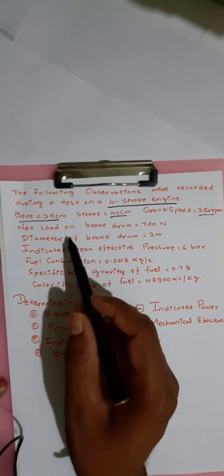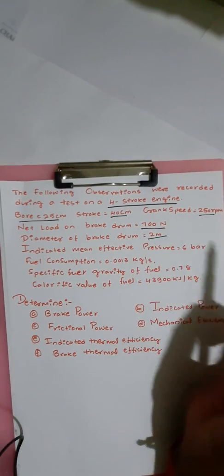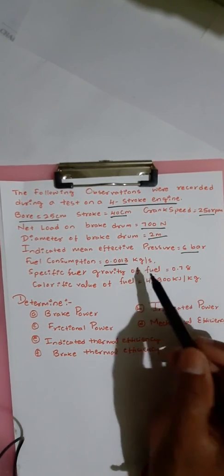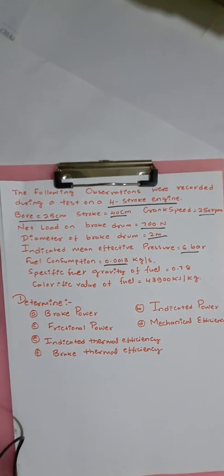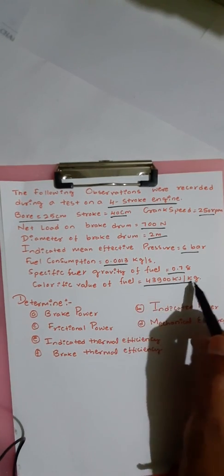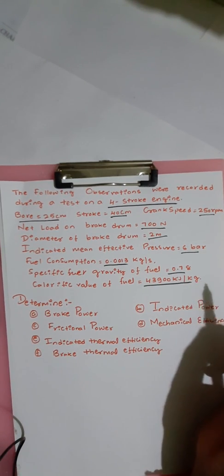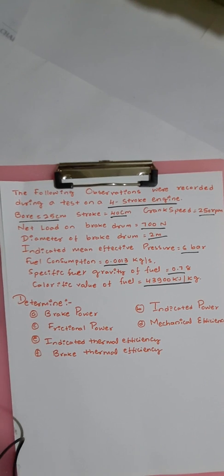The bore is 25 centimeter, the stroke is 40 centimeter, and crank speed is 250 RPM. The net load on the brake drum is 700 newton, the diameter of the drum is 2 meter, the indicated mean effective pressure is 6 bar, the fuel consumption mf is 0.0013 kg per second, and the specific gravity of the fuel is 0.78.